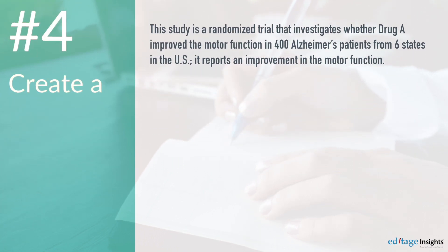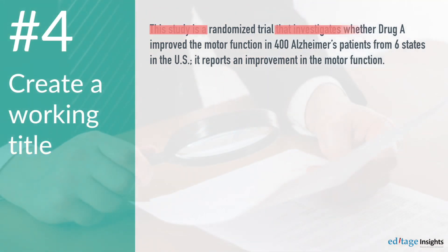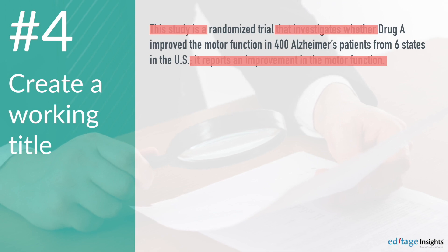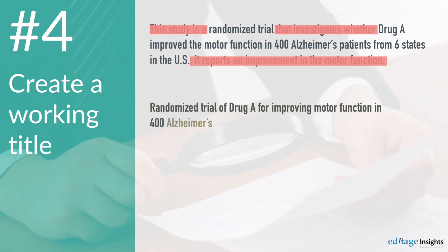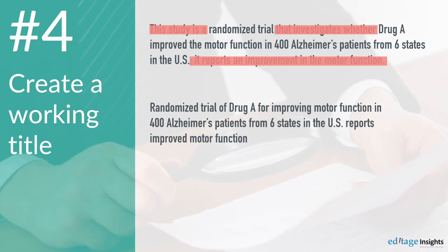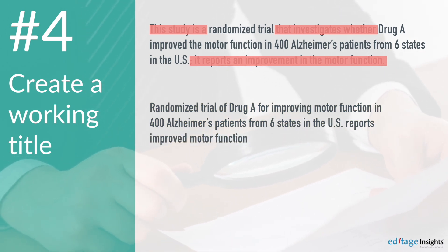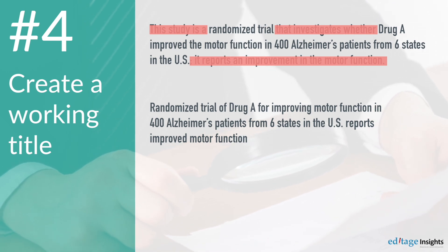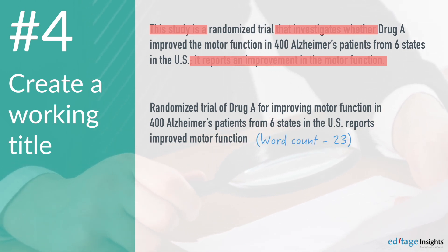Step 4: Create a working title. Delete all repetitive or unnecessary words from this sentence. Here's how. What you get from this example is: Randomized trial of Drug A for improving motor function in 400 Alzheimer's patients from 6 states in the U.S. reports improved motor function. Note the word count of this working title.